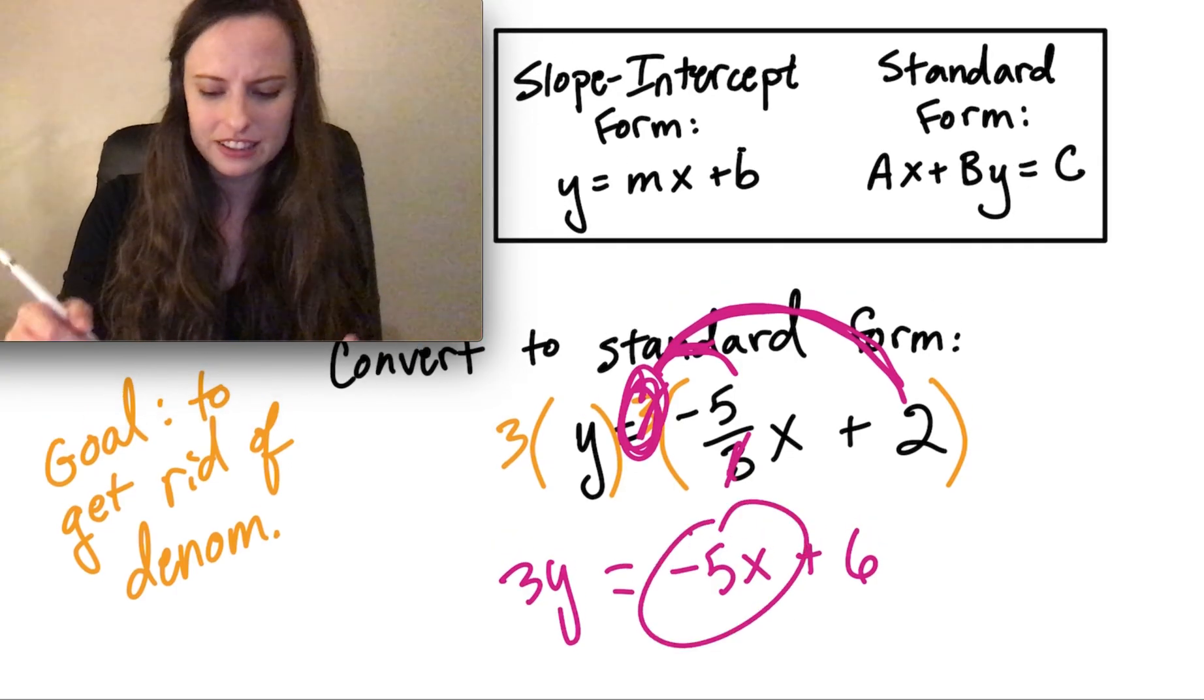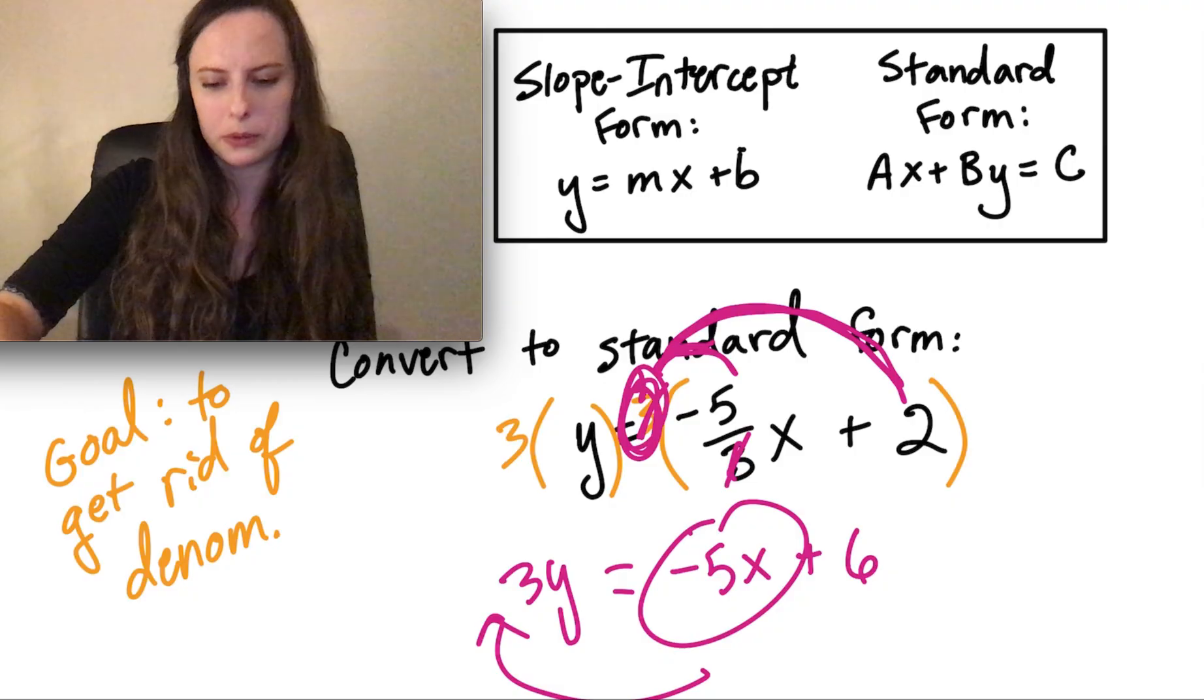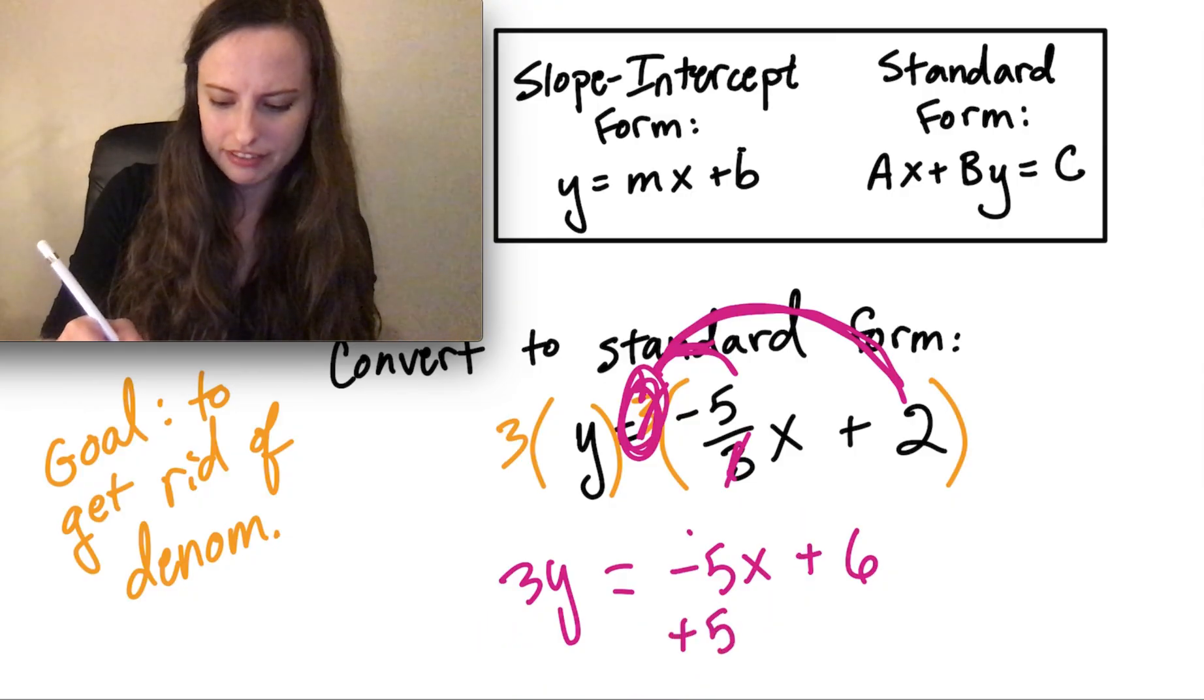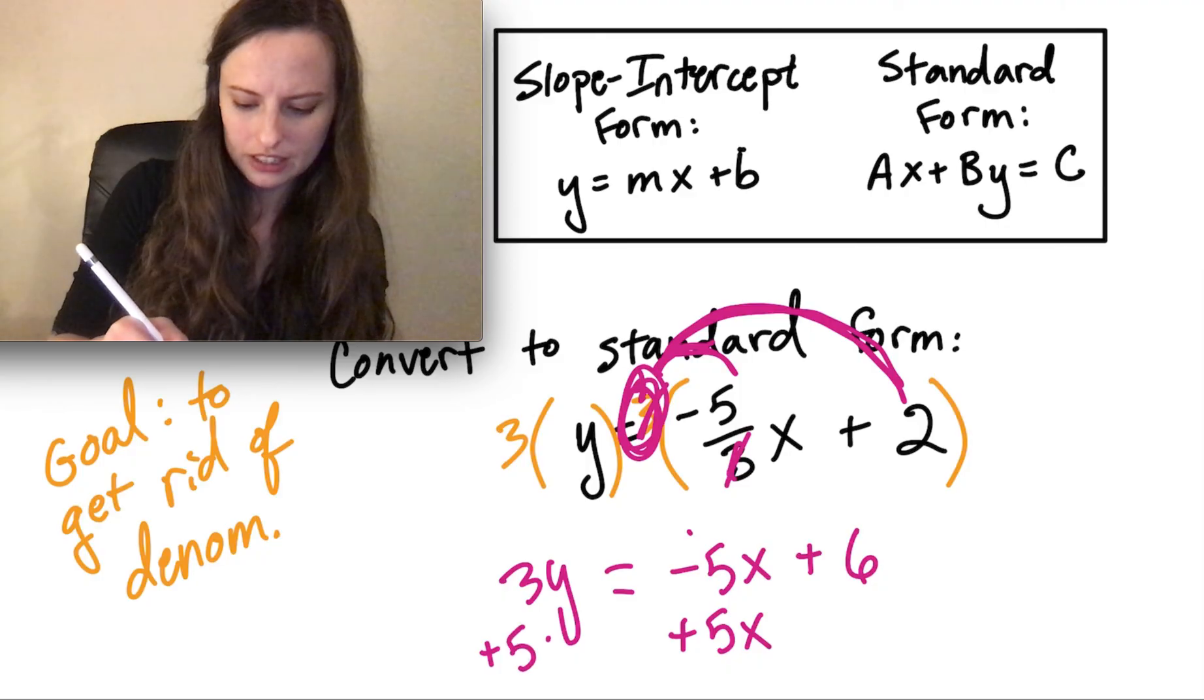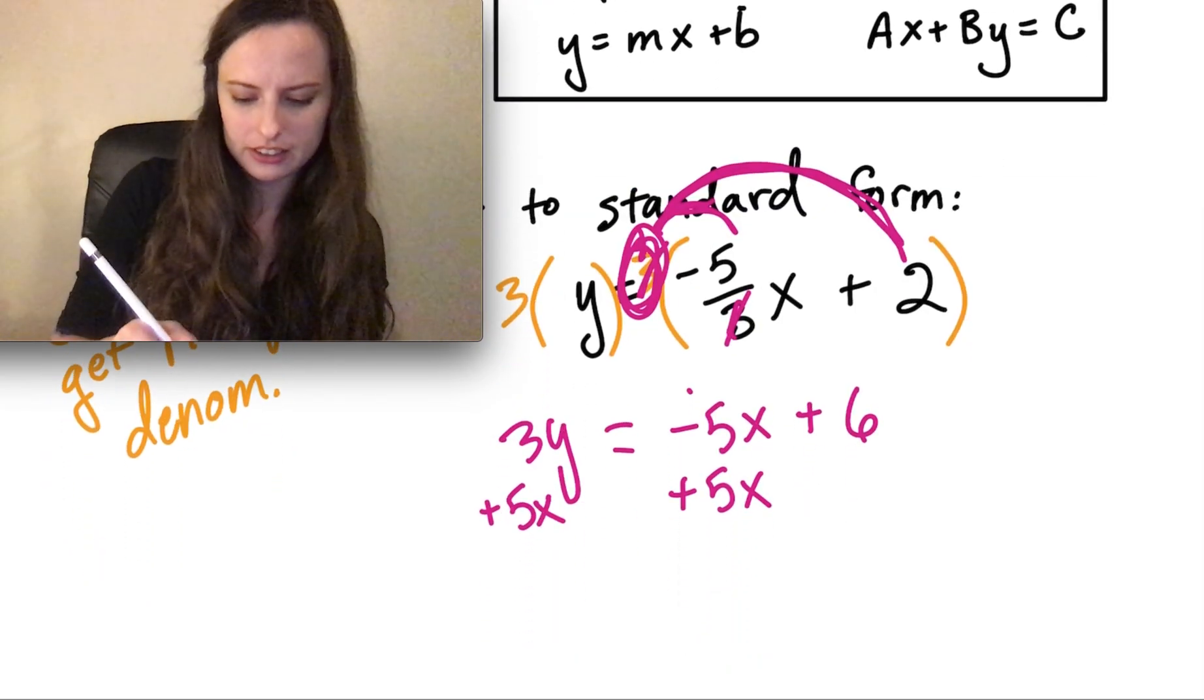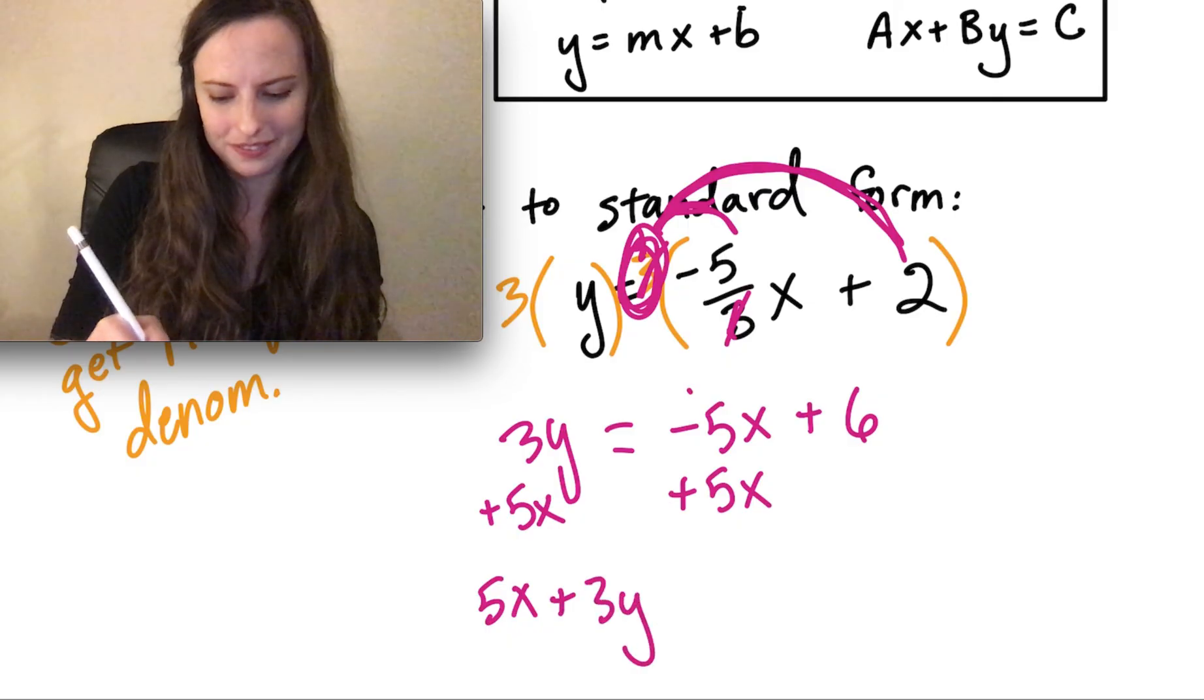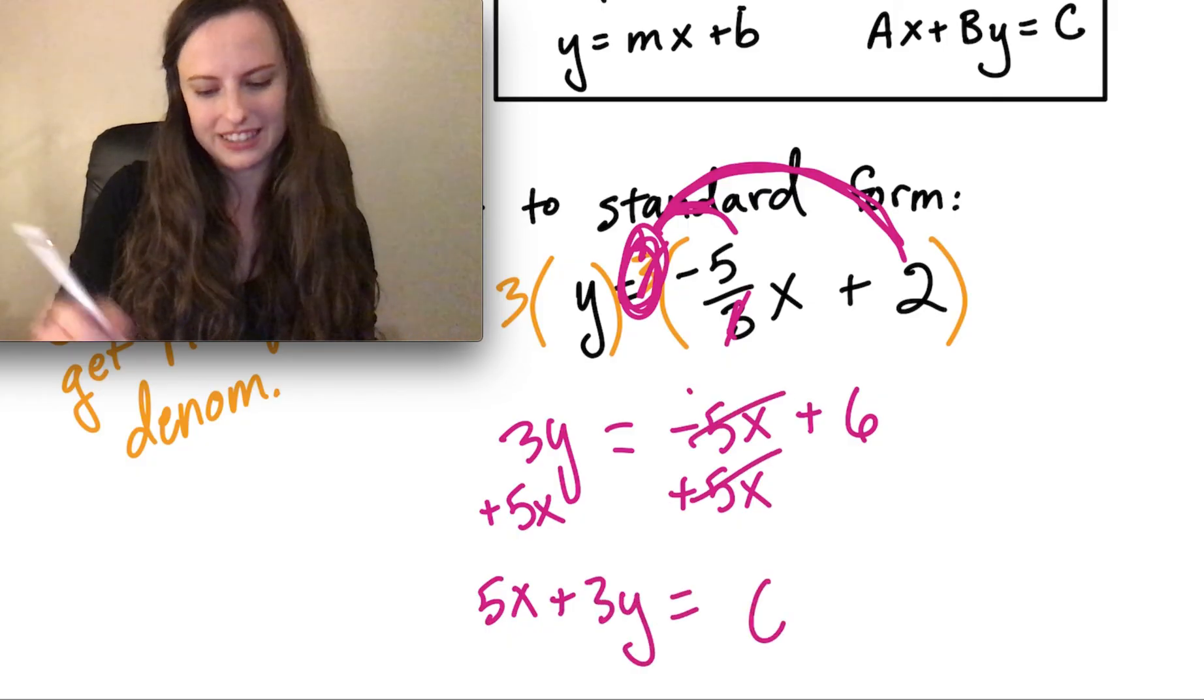All that's left is to move that x term over to the other side to be with the y. So this time it's negative, so we're just going to add 5x to both sides, giving us a final answer of positive 5x plus 3y equals 6.